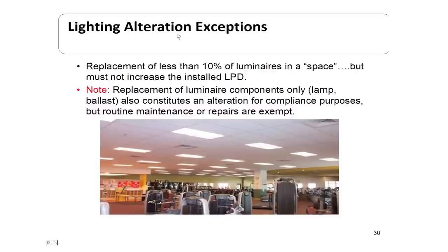On lighting alterations, replacement of less than 10% of the luminaires in a space is accepted and does not have to meet the standard's lighting power density requirement — but it must not increase the installed lighting power density. Note that replacement of luminaires and components only, such as the lamp and ballast, also constitutes an alteration for compliance purposes. Routine maintenance or repairs, however, are exempt.